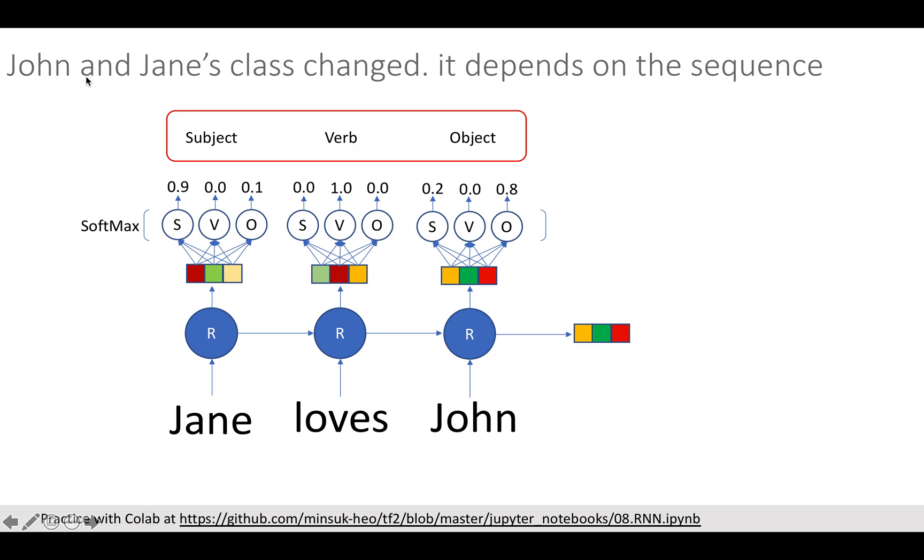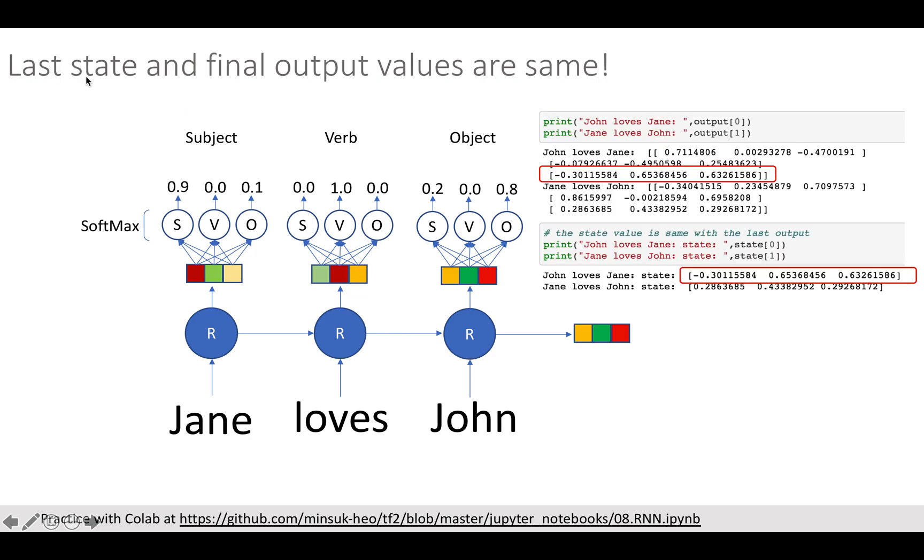RNN cell state and output are just identical values. For example, you can see that the last RNN cell state and output are identical from this slide as well.